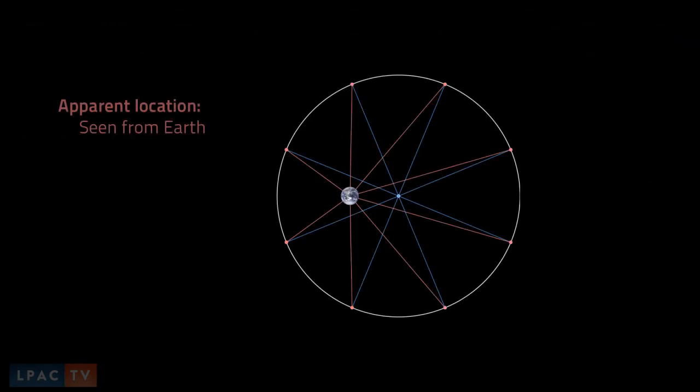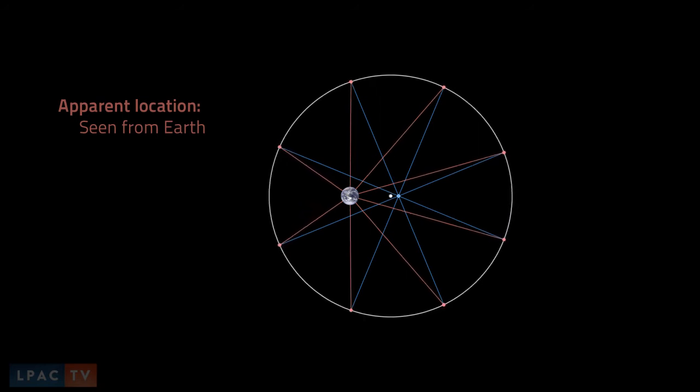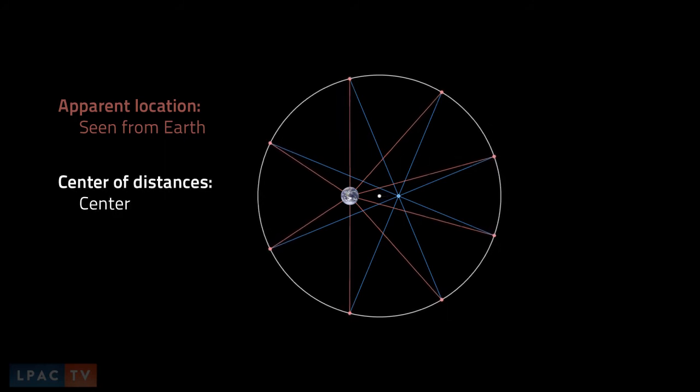So Ptolemy made a second adjustment to the deferent. He split the center in two. There would now be two centers, a center of distances and a center of motion.